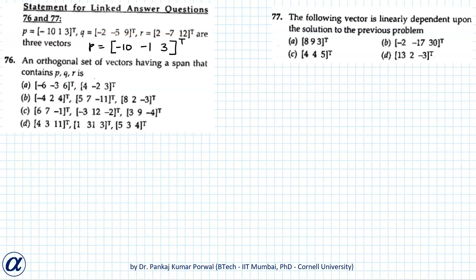In the next question, we want to find which of the given vectors is linearly dependent on the solution of the previous problem — that is, the basis of our vector space. We want to find which of the four option vectors lies in our vector space. A vector lies in the space if and only if it can be written as a linear combination of the basis vectors.